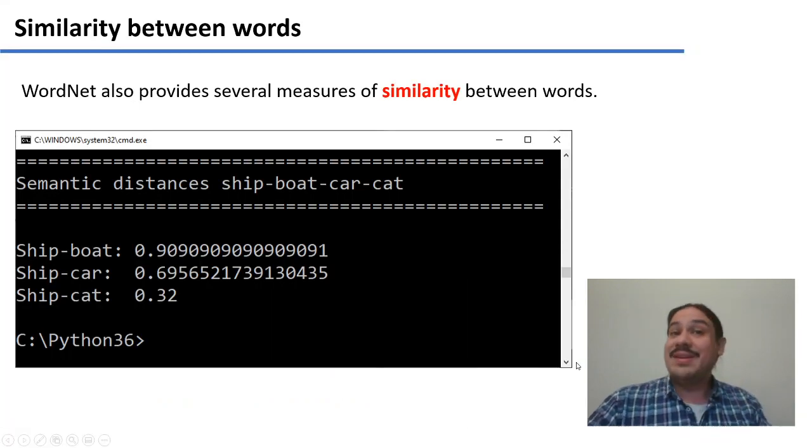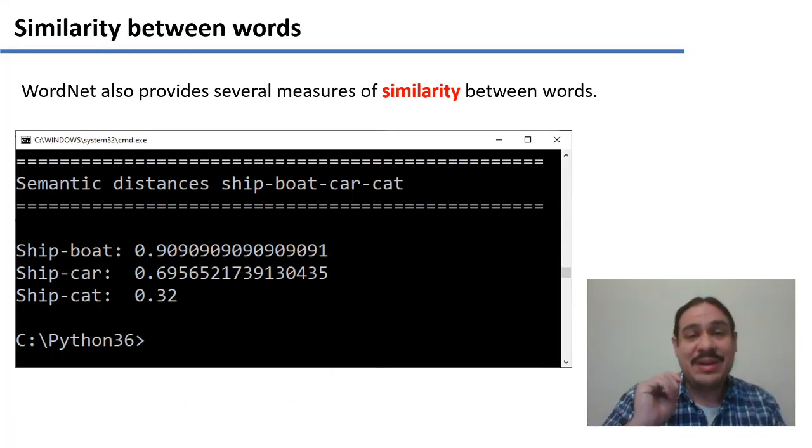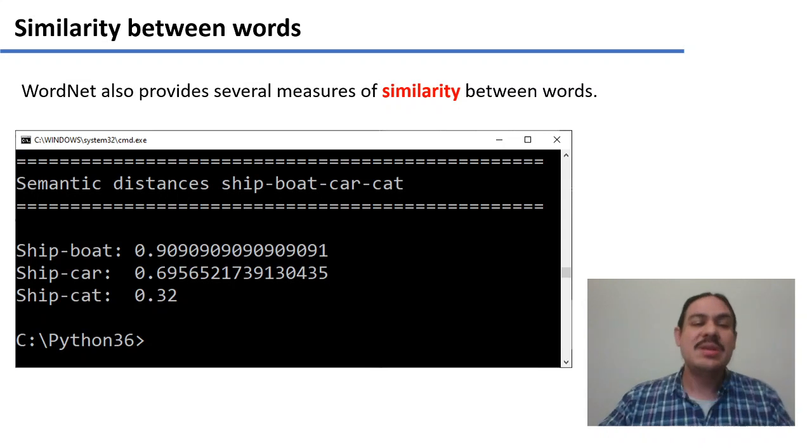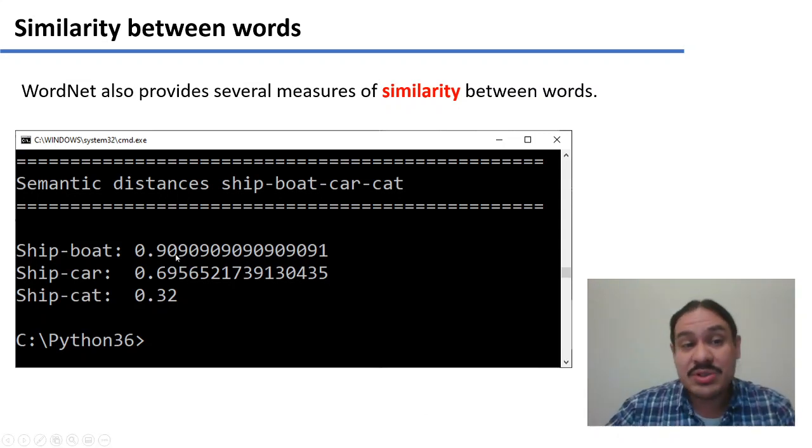One cool thing is that we can measure similarity between words. And there's many algorithms, depending on the way you traverse the different connections between the words. But as you can see, it works well. The ships and boats are very similar. Ships and cars are somewhat similar, because they are means of transportation. And ships and cats are less similar, but they still share some things. They're both entities in the world, for example.